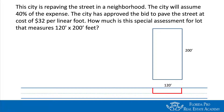Let's read the question: the city is repaving the street in a neighborhood. The city will assume 40% of the expense. The city has approved a bid to pave the street at a cost of $32 per linear foot. How much is the special assessment for a lot that measures 120 feet by 200 feet? We take $32 and multiply it by 120 feet of frontage, which gives us $3,840.